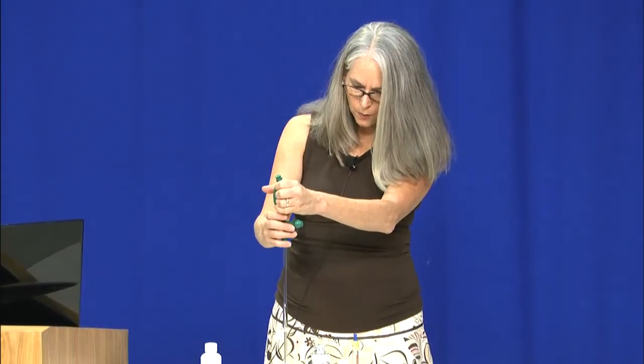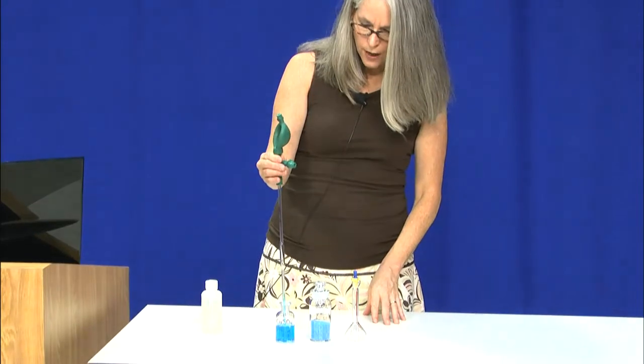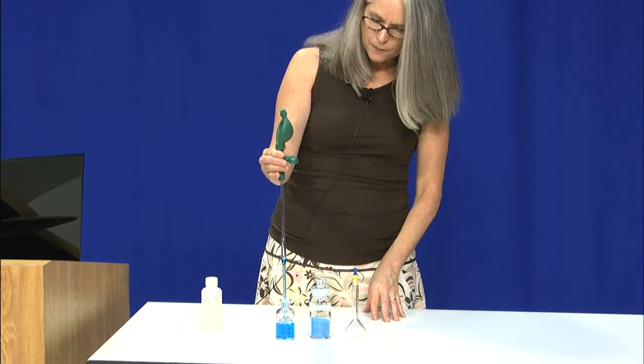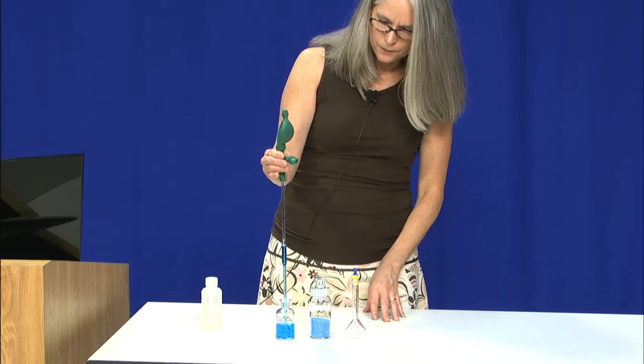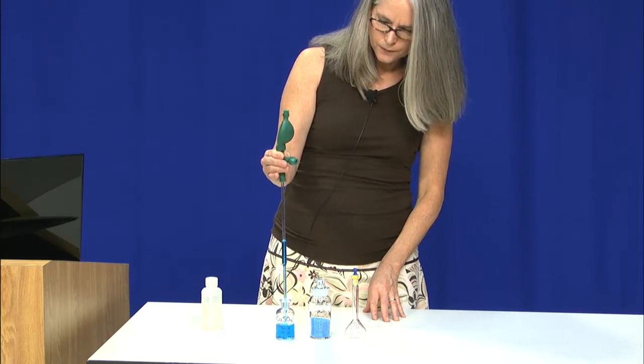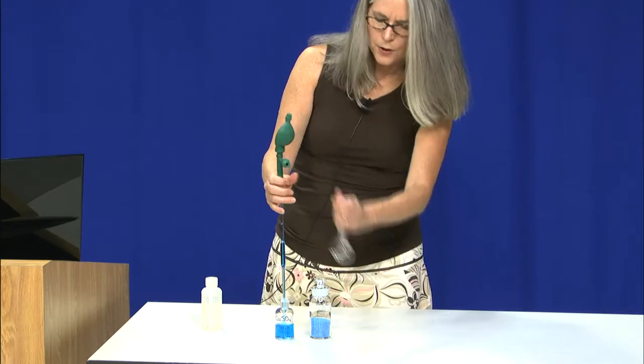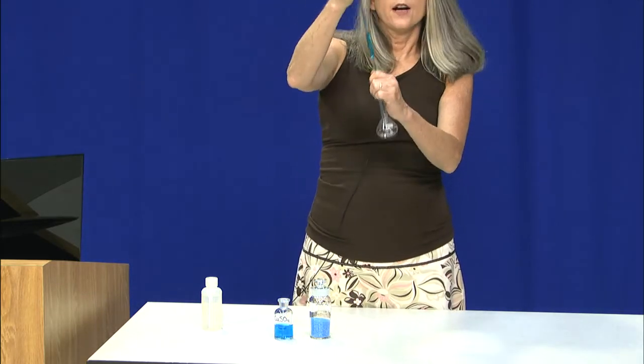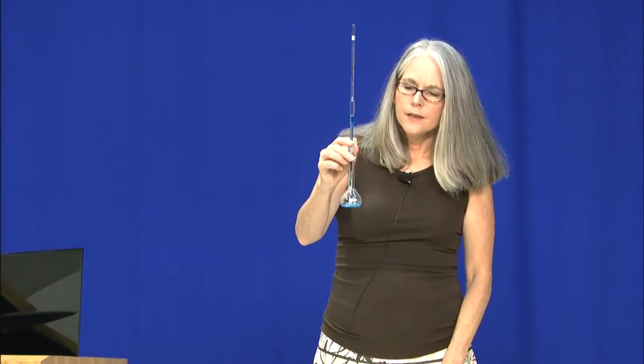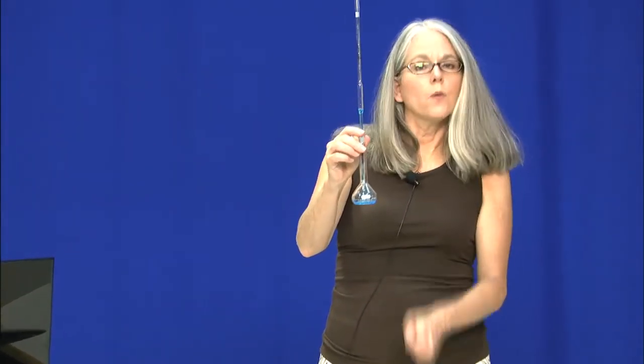For example, if I take this bulb and I pull out five milliliters of our concentrated stock solution, and we transfer that to our flask, and then we'll dilute with water.